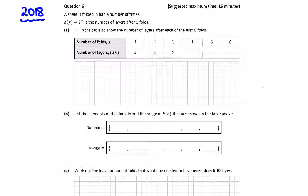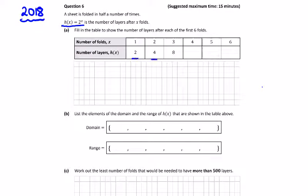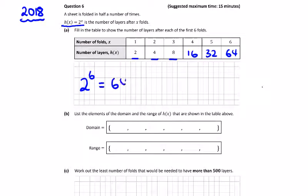In question six, we have a sheet folded in half a number of times. h(x), a function in terms of x, is 2 to the power of x. We can see a table below to fill in: 2, 4, 8 — it's doubling each time — 16, 32, 64. Just check 2 to the power of 6 on your calculator equals 64 if you can't see the pattern.